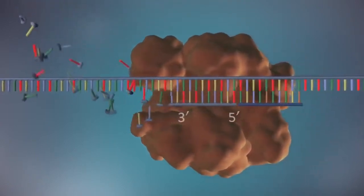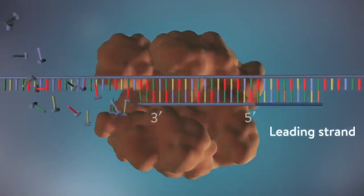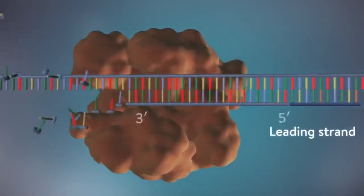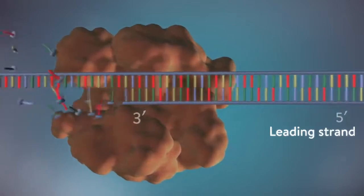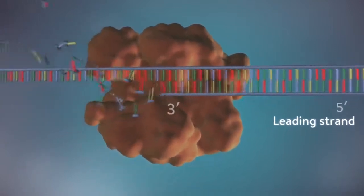One of the new strands of DNA, the leading strand, is made continuously, the DNA polymerase adding bases one by one in the five prime to three prime direction.